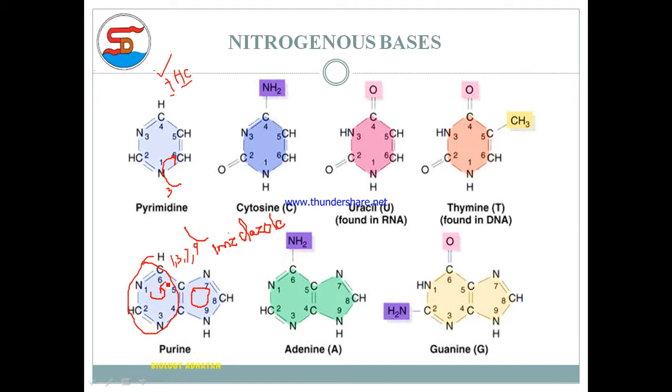There are five main nitrogenous bases found in DNA and RNA: cytosine, uracil, thymine, adenine, and guanine.